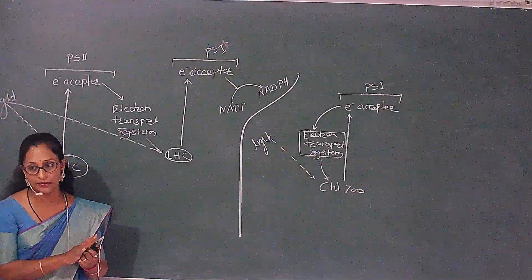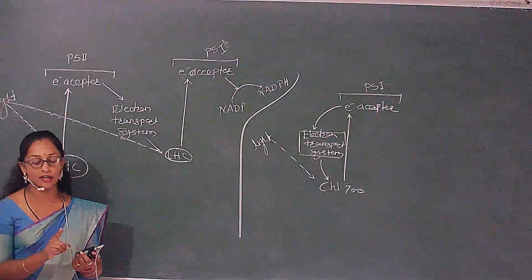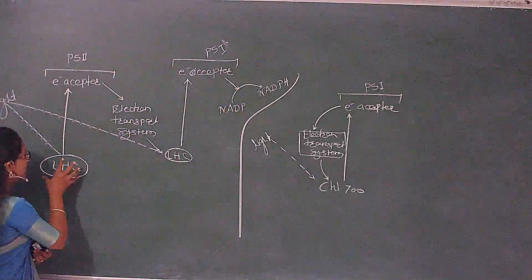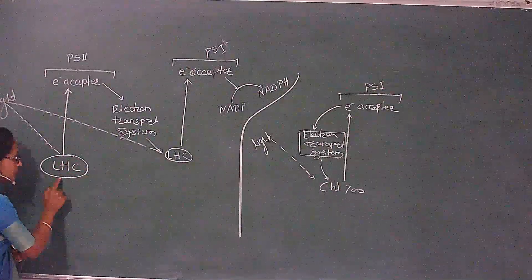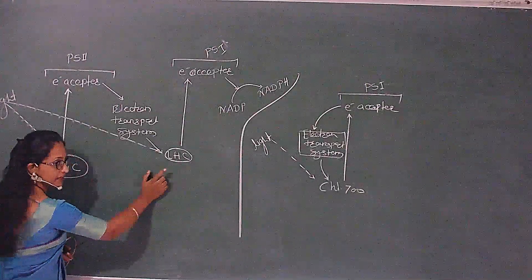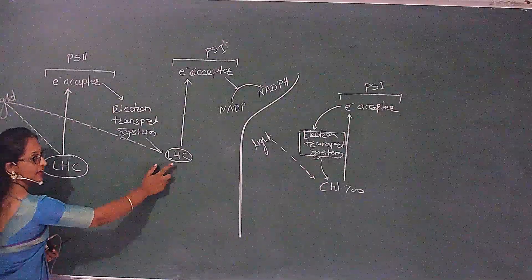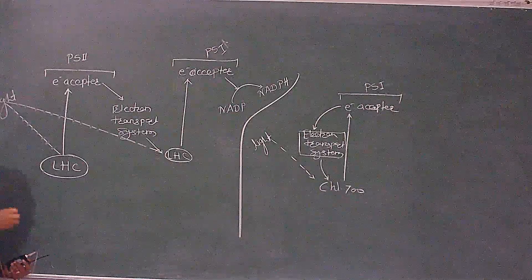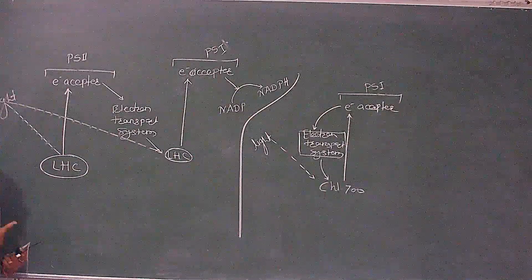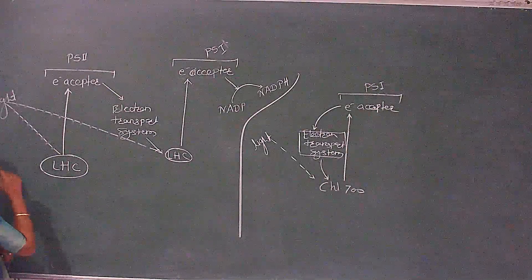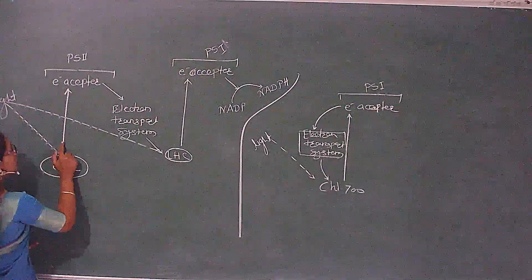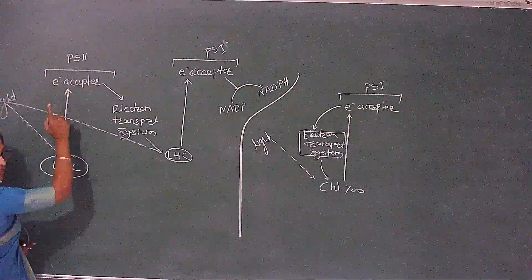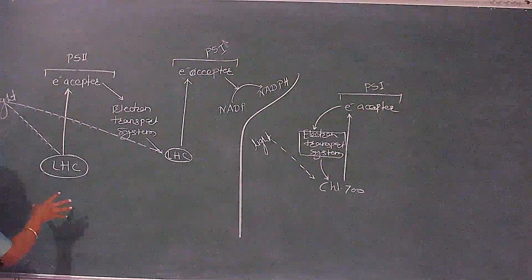Now let us look at the NCERT diagram, since neat diagrams are asked in exams. The oval shape shown here is called LHC — light harvesting complex — which transports absorbed light like chlorophyll A. Through this, whatever electrons are emitted go to the first electron acceptor.